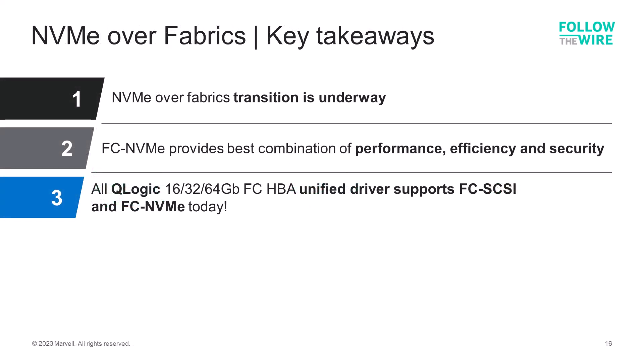Here are the key takeaways regarding the customer's transition to NVMe over fabrics. First, that transition is well underway with all tier 1 storage vendors now offering native NVMe storage arrays connecting to NVMe over fabric networks. Second, fiber channel over NVMe or FC NVMe provides the best combination of performance, efficiency, and security with full hardware offload and a storage network that's not part of the corporate network. And finally, all QLogic 16, 32, and 64-gig fiber channel HBAs support FC NVMe in the latest operating systems with storage arrays from all tier 1 vendors, utilizing a unified driver to eliminate the need for host server driver updates when adding FC NVMe native storage to an existing environment.